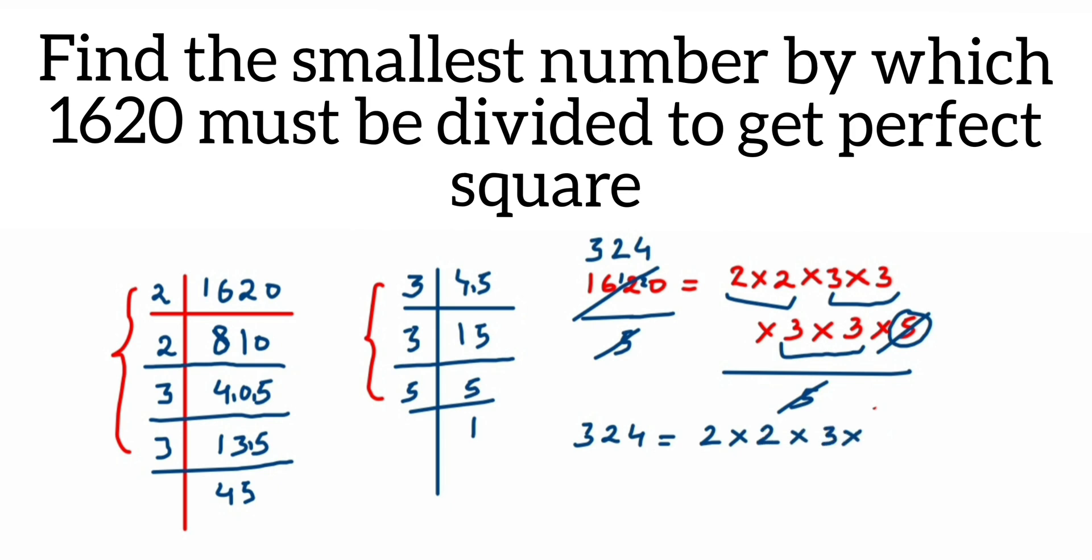Then we can find out the square root from this. When you find the square root of 324, from each pair we have to take one factor, and that will be your answer.